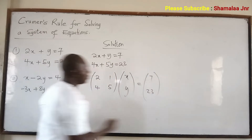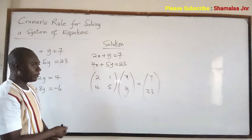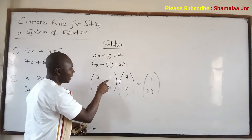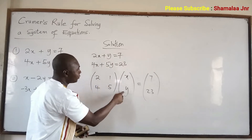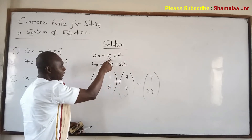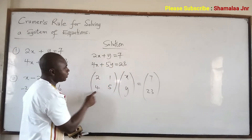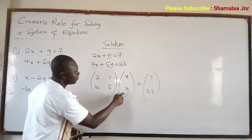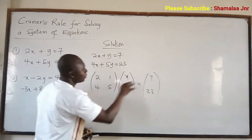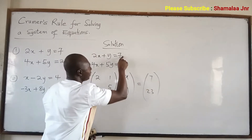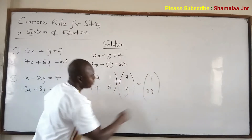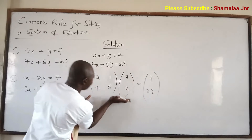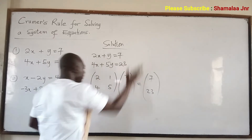So you go to the other side: 2 times x, 2x, plus 1 times y; then 4x plus 5 times y. And the right-hand side is 7 and 23. So this matrix form is the same as the original system.